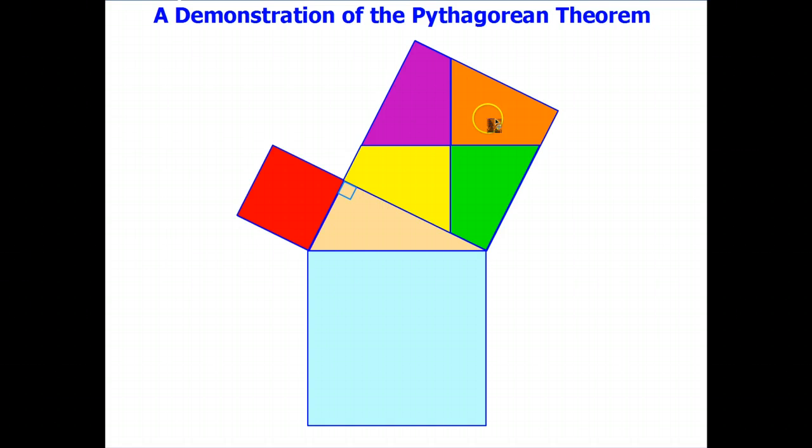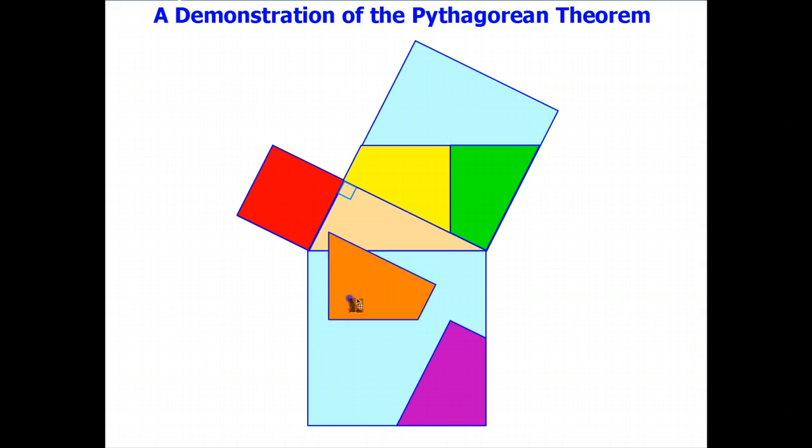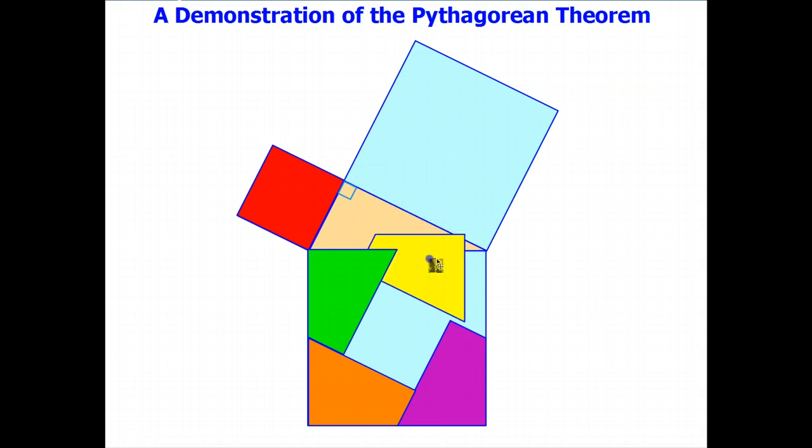Pythagorean Theorem says the area of that square plus the area of that square equals the area of the square on the hypotenuse. So I can demonstrate that just by moving these four pieces from the large square drawn on the legs.